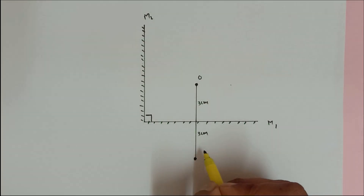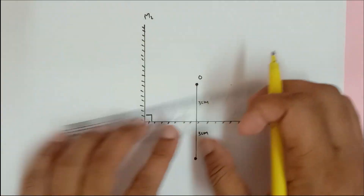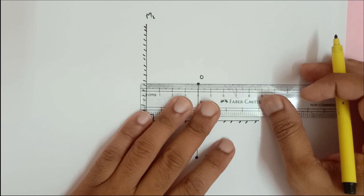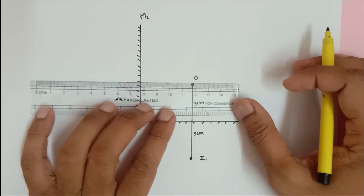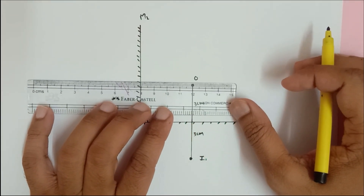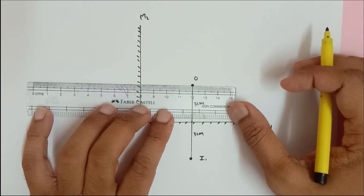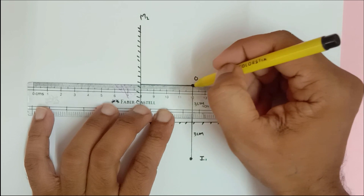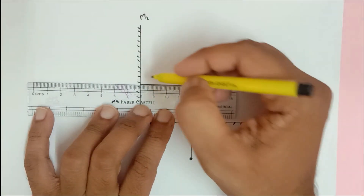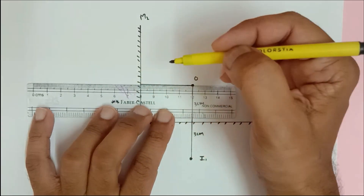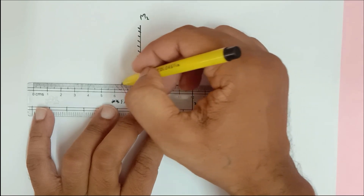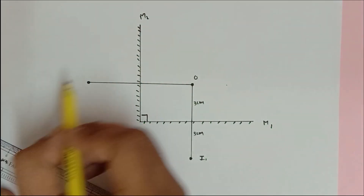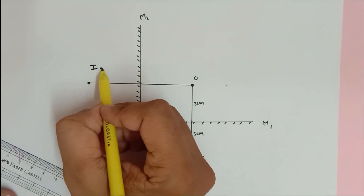This image is virtual and direct. In the same way, if I drop a perpendicular line, this distance is 4 centimeters — you can check from 12 to 8 it is 4 centimeters — and again 4 centimeters behind, the image is going to be formed here. I am going to call this image I2.